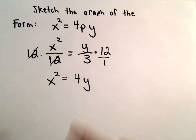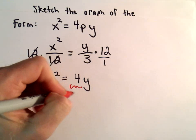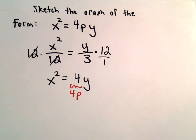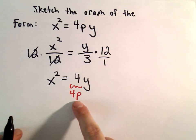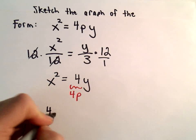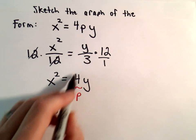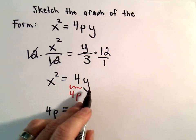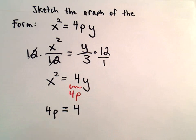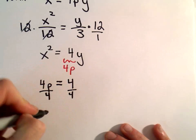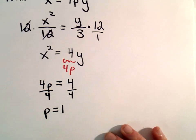I want to write this in the form 4 times some number p. It's pretty clear what p should equal, but if it was more complicated, you would say 4 times p equals whatever the coefficient in front of y is, which is 4 in this case. If we divide both sides by 4, we'll get p equals 1.